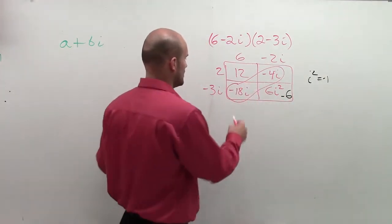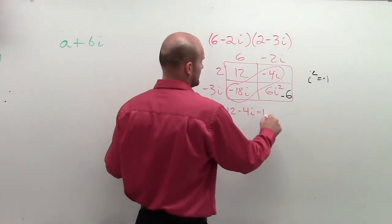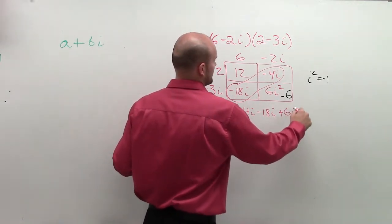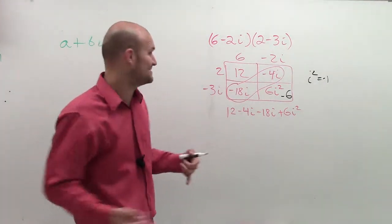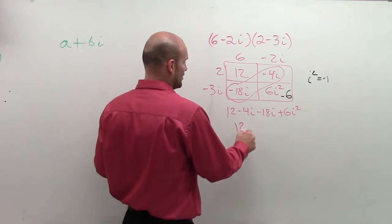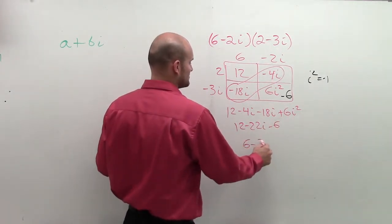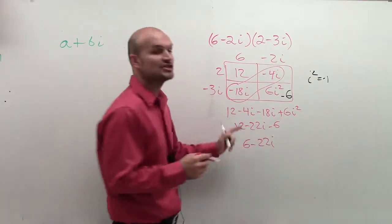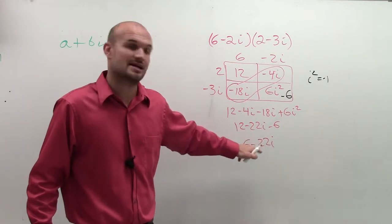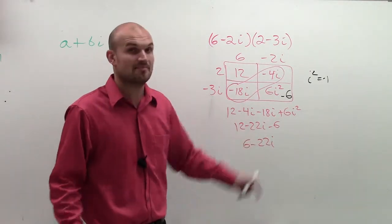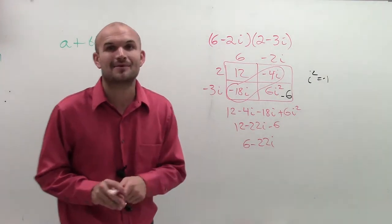So when you write everything out: 12 minus 4i minus 18i plus 6i squared. The more practice you get, you end up with 12 minus 22i minus 6, which simplifies to 6 minus 22i. Make sure we leave our complex number in standard form, a plus bi, where a equals 6 and b equals negative 22. Make sure we do that, and you're good.